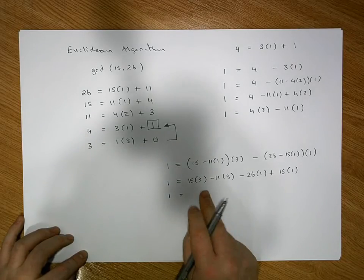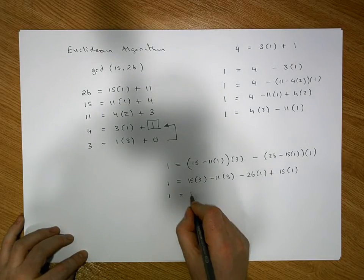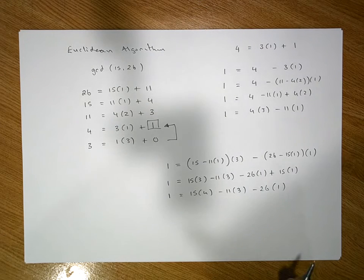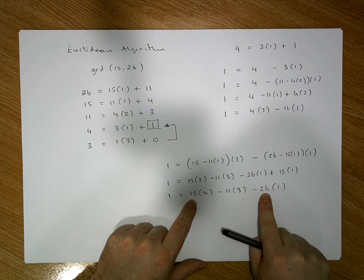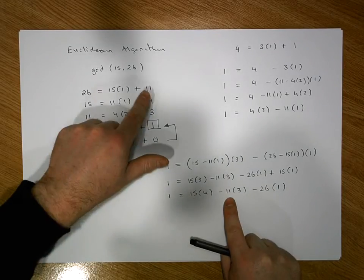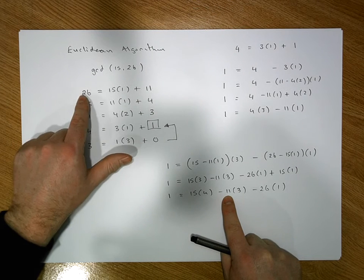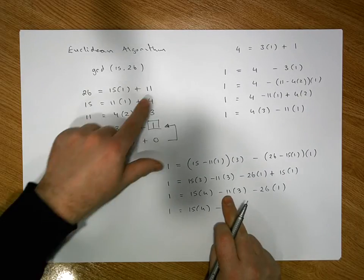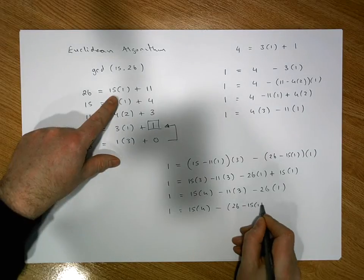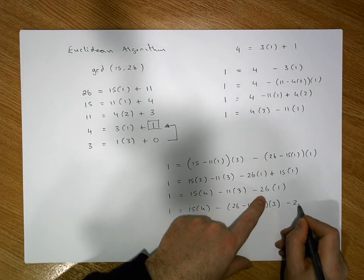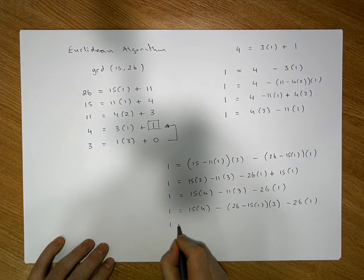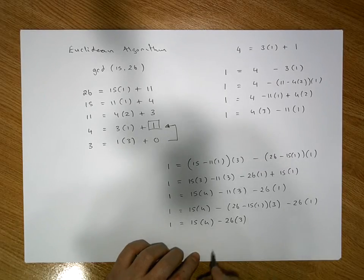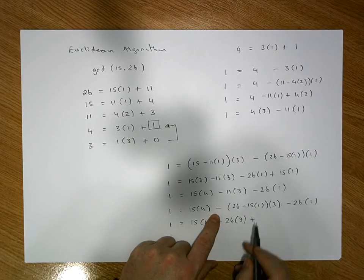Bringing common terms together: there are 3 instances of 15 here and one more, giving us 4 total, so it's 15 times 4 minus 11 times 3 minus 26 times 1. Now, importantly, we don't substitute into the 15 and 26 — those are what we require. But we can substitute the remainder 11, since 11 equals 26 minus 15 times 1. This gives us 1 equals 15 times 4 minus (26 minus 15 times 1) times 3 minus 26 times 1. Multiplying out: 1 equals 15 times 4 minus 26 times 3 plus 15 times 3 minus 26 times 1.